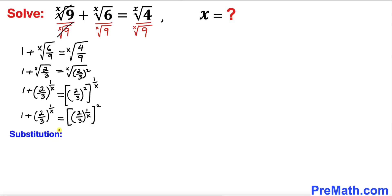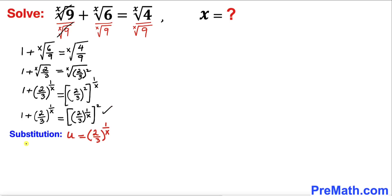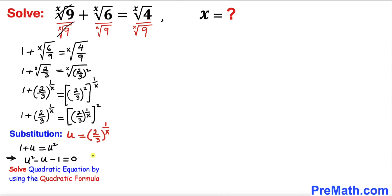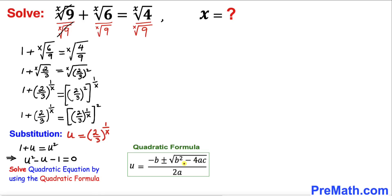Now let's make a substitution to simplify things. We can see that (2/3)^(1/x) appears in two places, so let u equal (2/3)^(1/x). Therefore our equation becomes 1 plus u equals u-squared. Moving all terms to one side gives us u-squared minus u minus 1 equals 0.